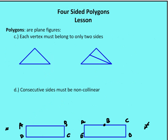The third criterion is that each vertex must belong to only two sides. On the left-hand side, vertices A, B, and C each belong to only two sides. On the right-hand side, I have vertices A, B, C, and D, and vertex B belongs to three different sides. So the example on the right would not be considered a polygon because B belongs to three different sides.